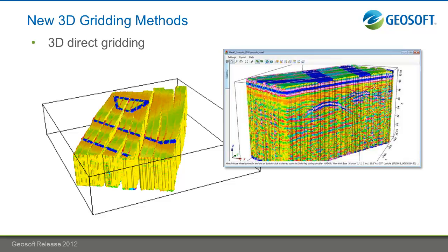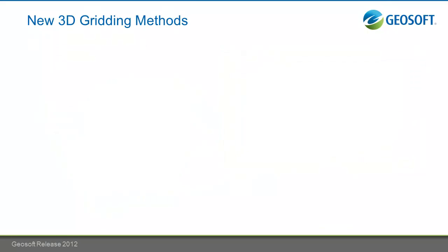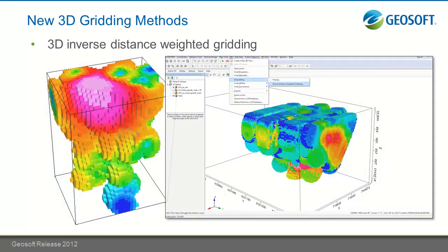Direct gridding gives you the ability to plot out minimum, means, or maximums of your values, and it's really useful in large, densely collected data sets. You can use this for GPR, and you can also plot your models if you've got direct values for any models that you're working with. Inverse distance weighted gridding is also really good for geochemistry data, and it's better for localized effects.